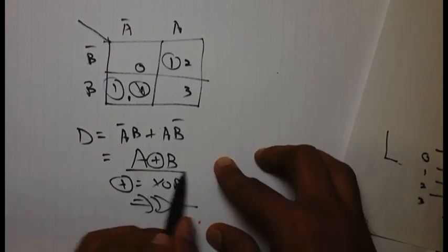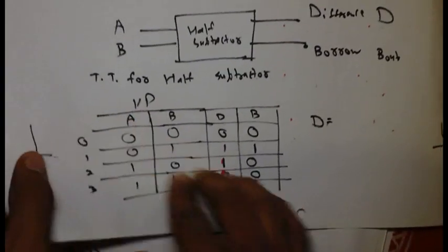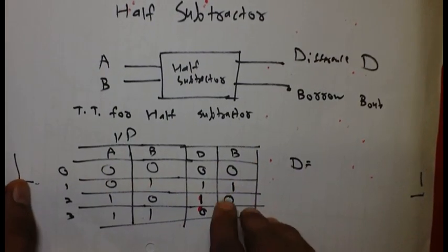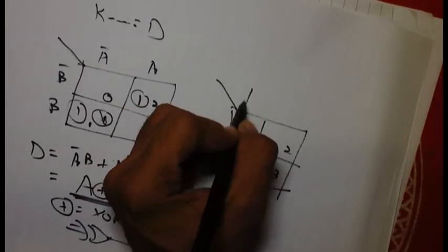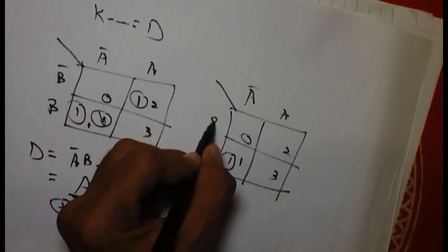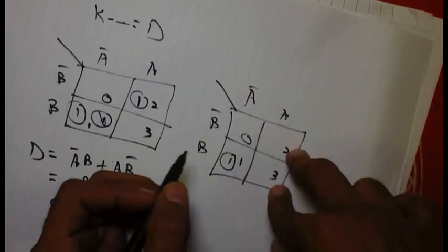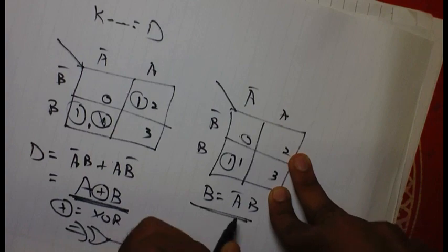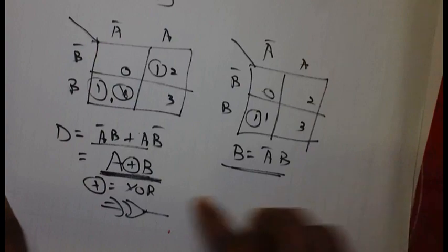Now we will calculate for the borrow. For borrow only one is active, so one here. This is A bar, this is B bar B, so for one this will be A bar B. So borrow is A bar B. So these are our Boolean expressions.